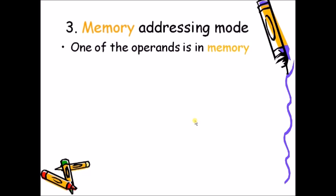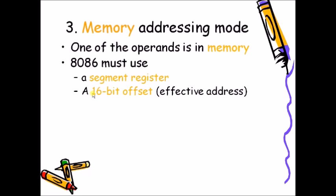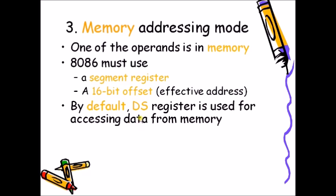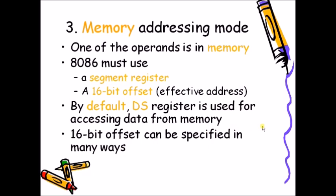In memory addressing mode, one of the operands is in memory. The 8086 must use a segment register as well as an offset register to get the physical address. The offset address is also called the effective address. By default, DS is the register used for accessing data from memory. The 16-bit offset can be specified in different ways: direct memory addressing, register indirect addressing, based addressing, index addressing, and based index addressing.